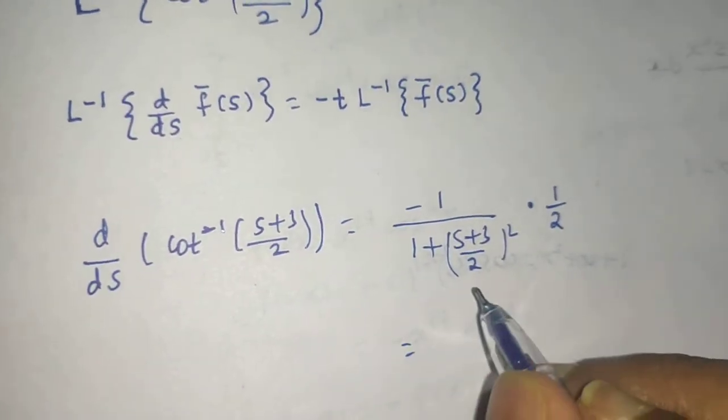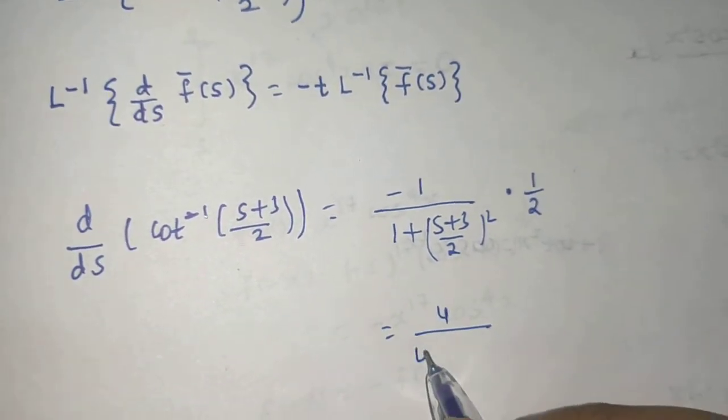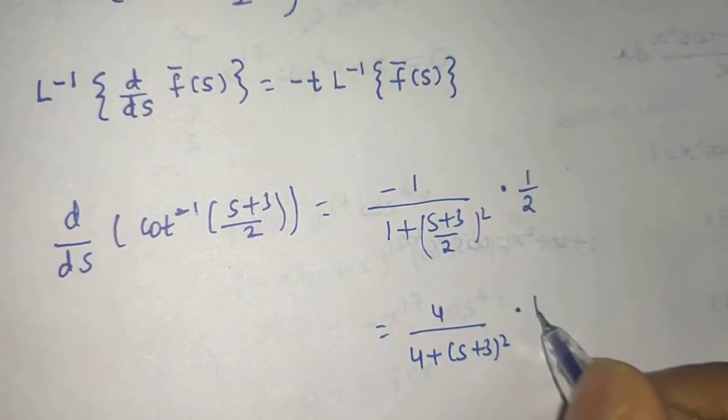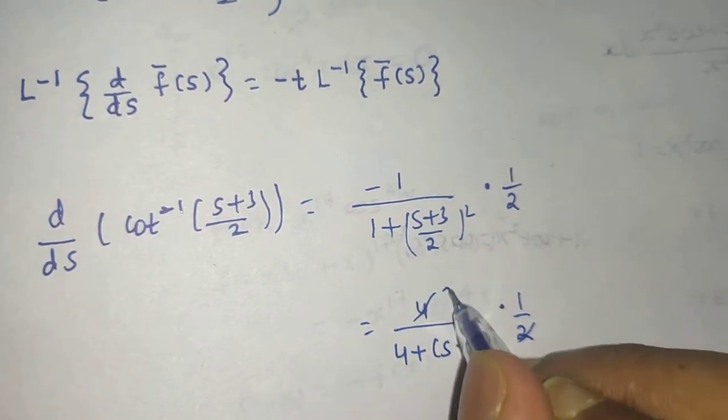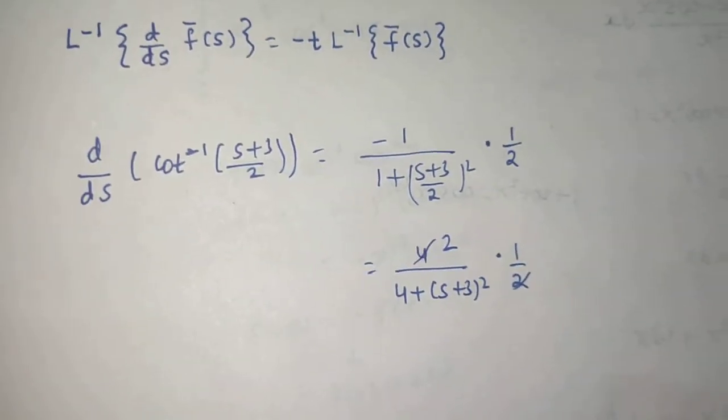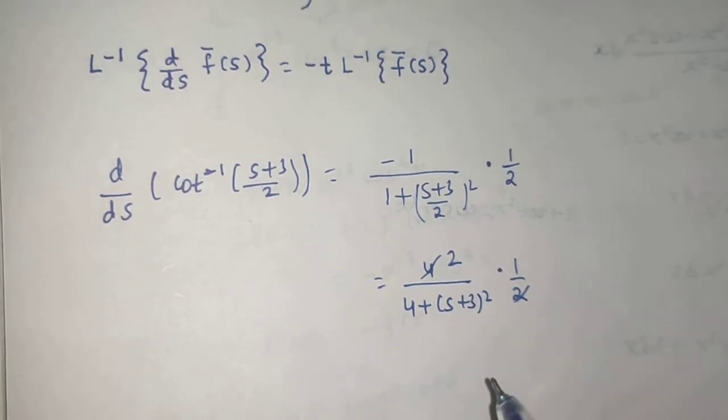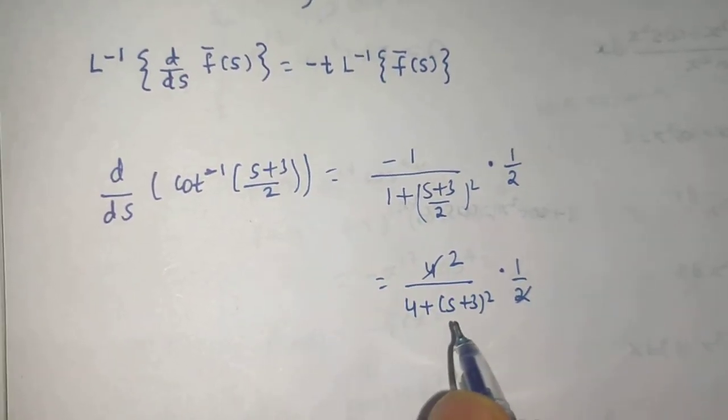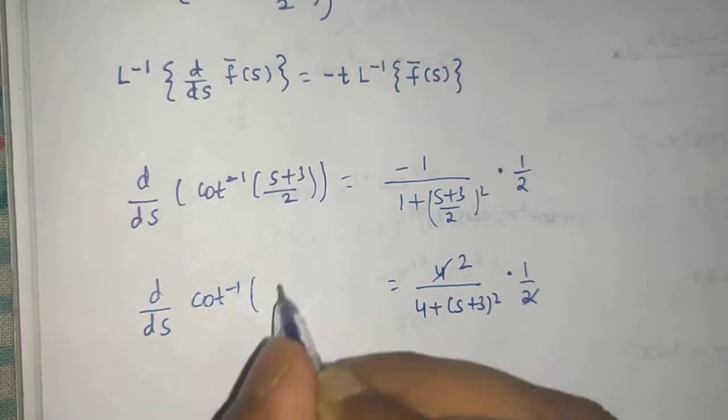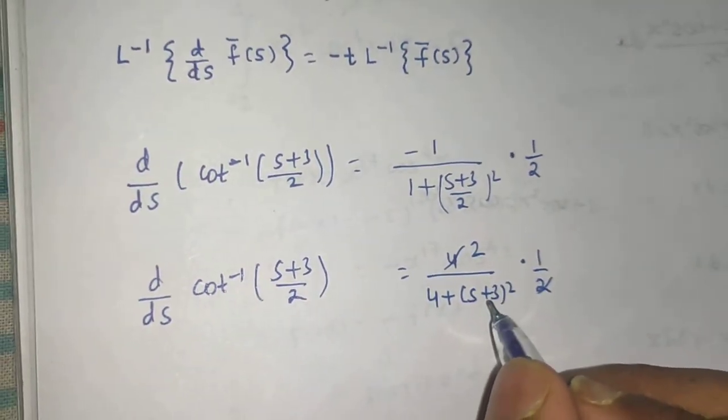Simplifying the RHS: the 4 goes to the numerator and we get -2/(4 + (S+3)^2). I'm not expanding the (S+3)^2 bracket because we'll use the first shift rule later. So d/dS(cot^(-1)((S+3)/2)) = -2/(4 + (S+3)^2).